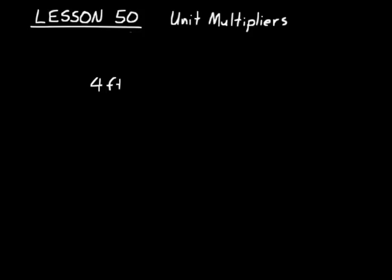What I want you to do — because eventually when you have more difficult problems you'll need to know the steps — is use a unit multiplier instead of just doing it in your head. Unit multipliers are fractions where the numerator and denominator are the same value. You know that 1 foot equals 12 inches, so you can write that as a fraction: 1 foot over 12 inches, or 12 inches over 1 foot.